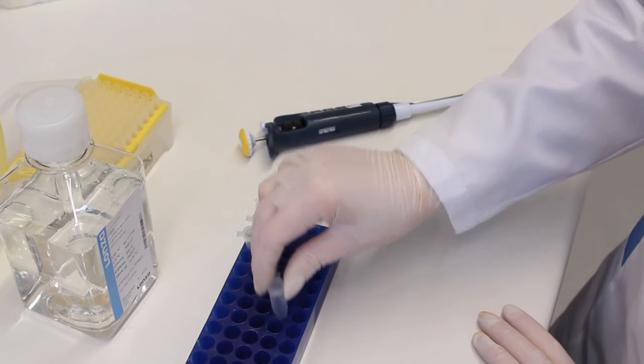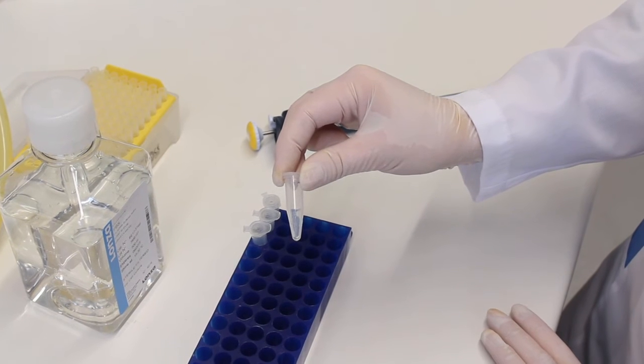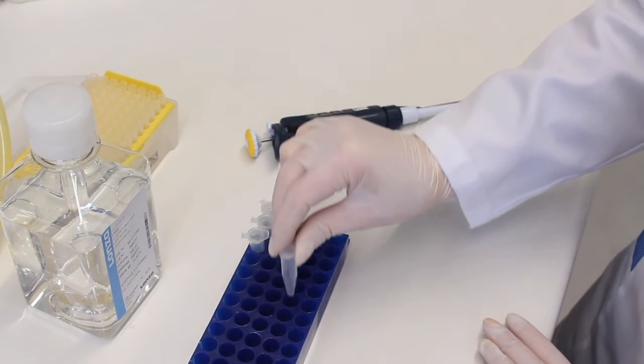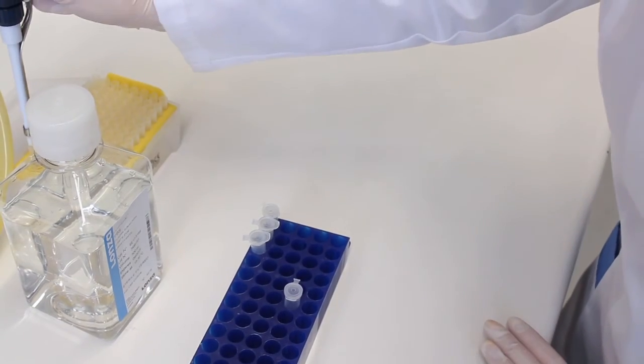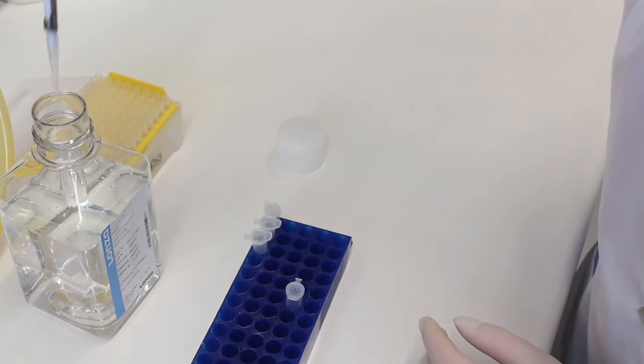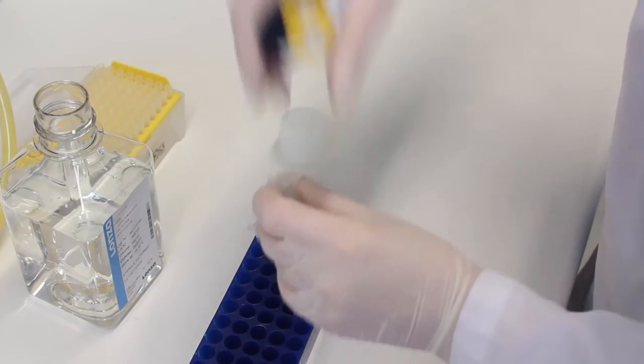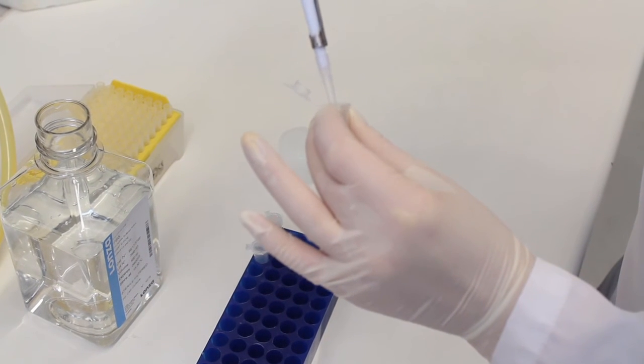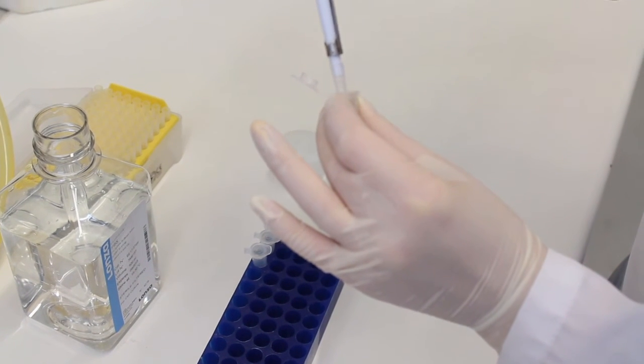The pellet are exosomes which can be almost invisible or look like a thin transparent film. Resuspend the pellet in 100 microliters of PBS for ELISA analysis. Or in any other volume appropriate for other analysis.